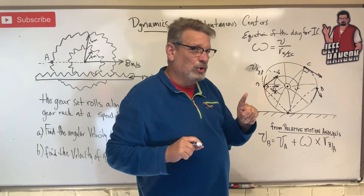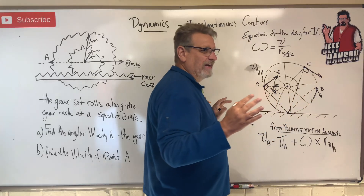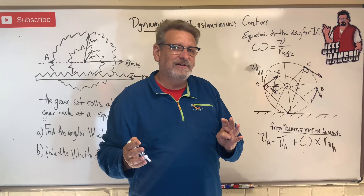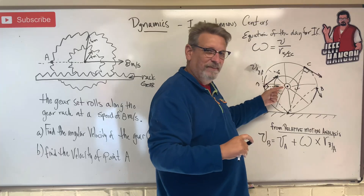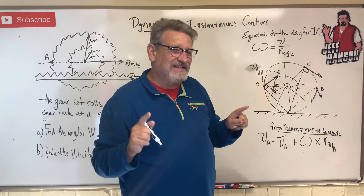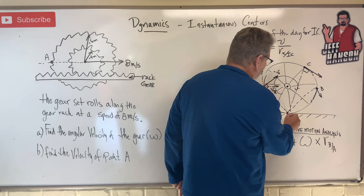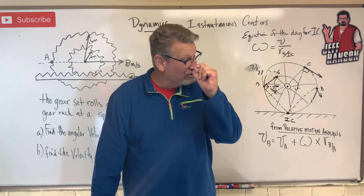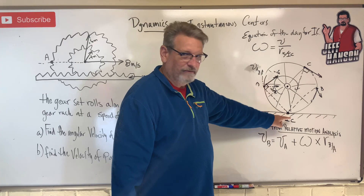That would only be true if all of the velocities at any point are tangential to the path. There is an acceleration tangential to the path, but there's also an acceleration normal to the path - we know the particle is actually moving like so. This point down here is actually the instantaneous center. At that particular snapshot in time, this point right here is rotating about there.